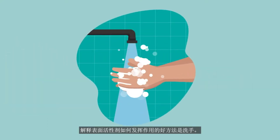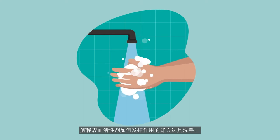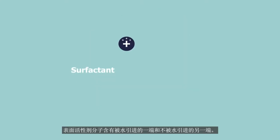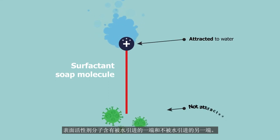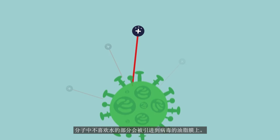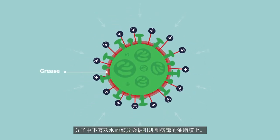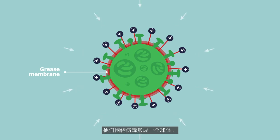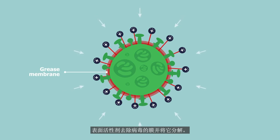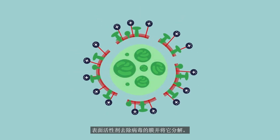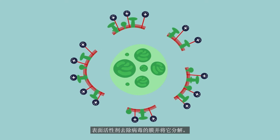A great way to explain how surfactants work is through washing your hands. A surfactant molecule contains one end that is attracted to water and the other end that is not. The part of the molecule that does not like water is attracted to the grease membrane of the virus. They surround the virus, forming a sphere.